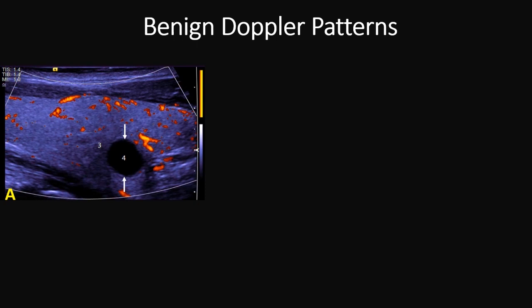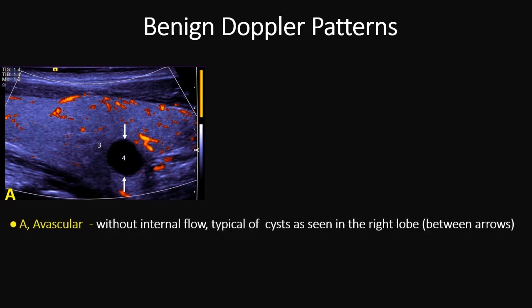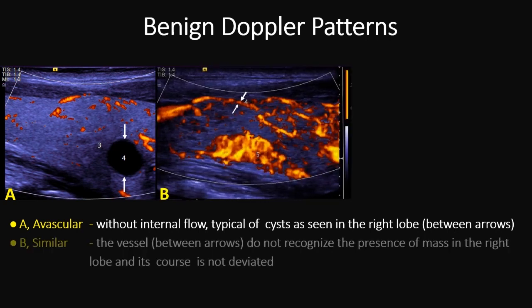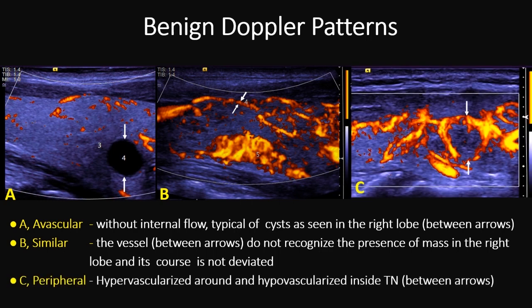Here are the benign Doppler patterns. The avascular pattern shows no internal flow, typical of cysts, as seen in this lesion. The similar pattern is shown here, where vessels do not recognize the presence of a thyroid lesion and their courses are not deviated. And the peripheral pattern shows hypovascularization around the lesion and hypovascularization inside.